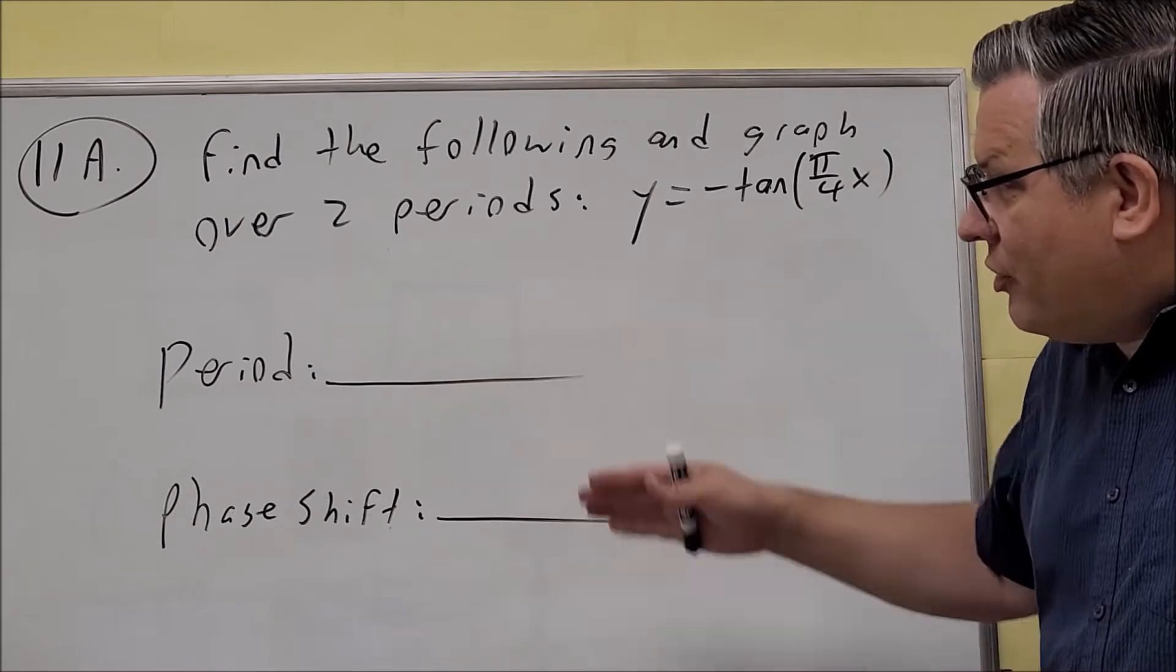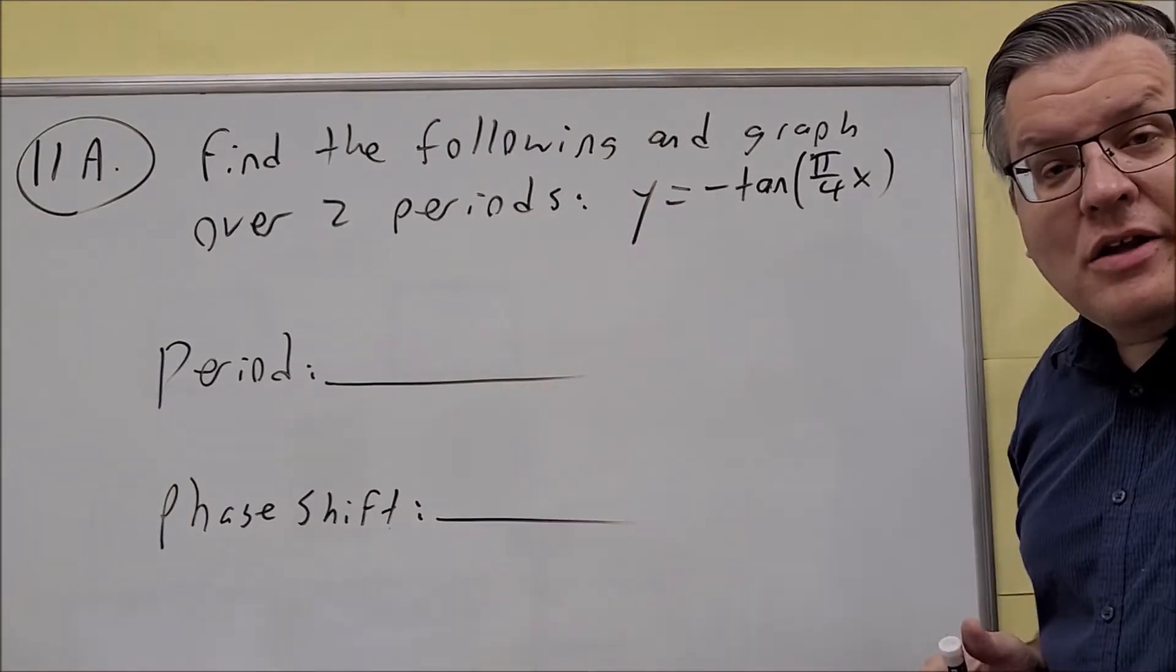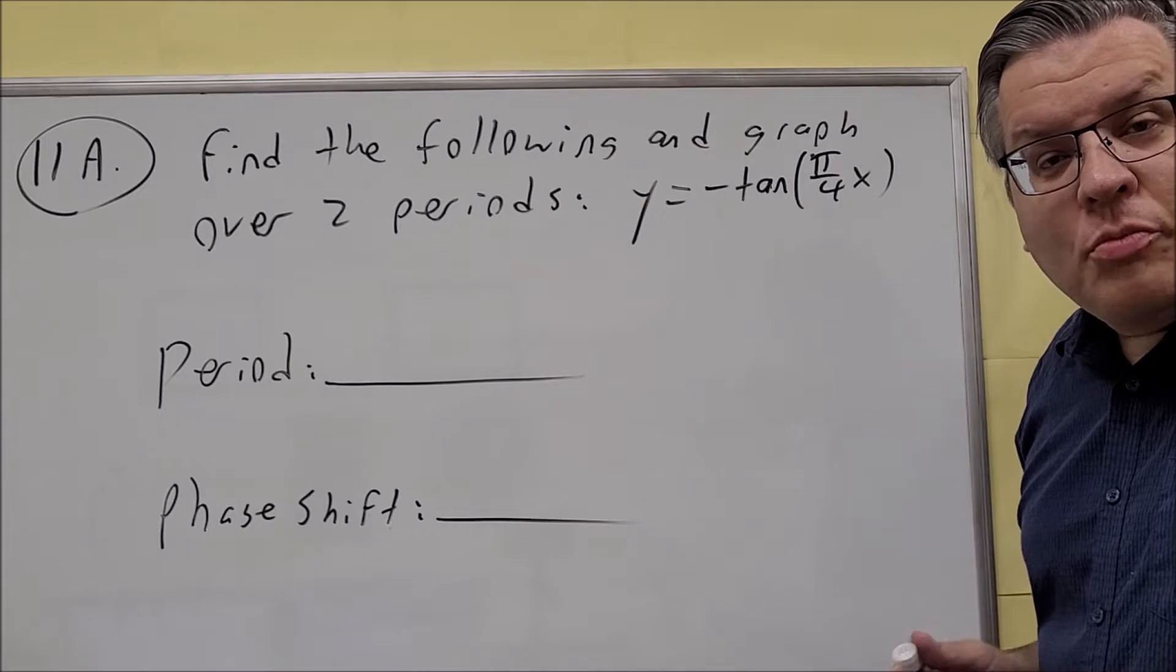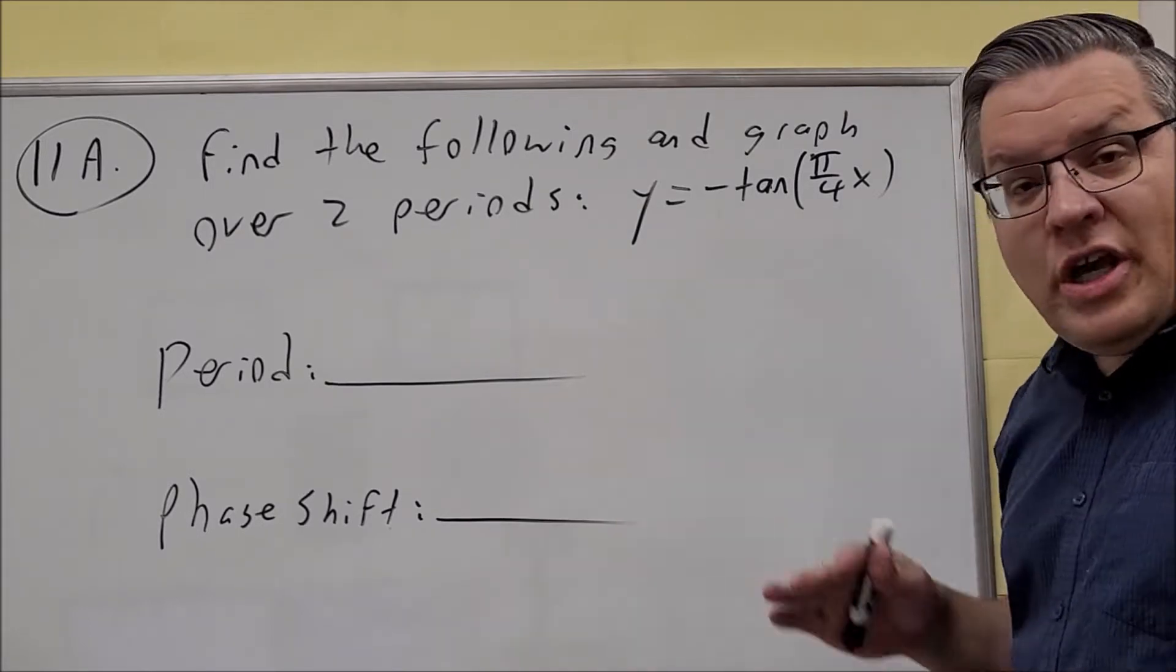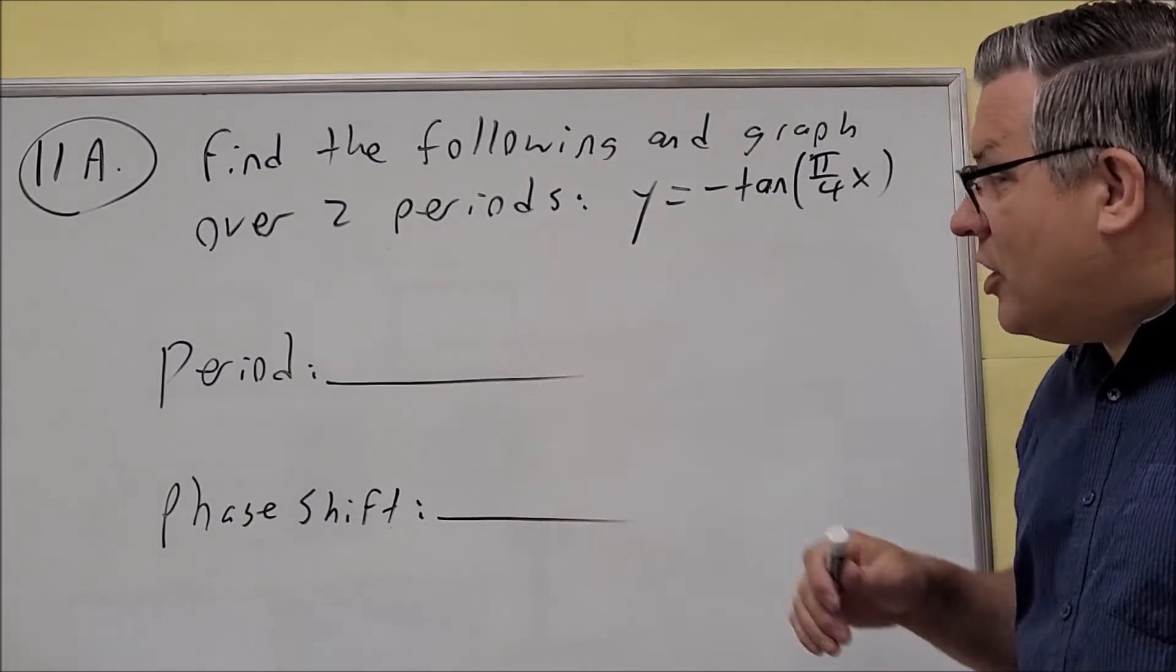For the tangent graph, it's only going to ask you for the period and the phase shift. Remember that on tangent and cotangent, there's no amplitude, so just period and phase shift.